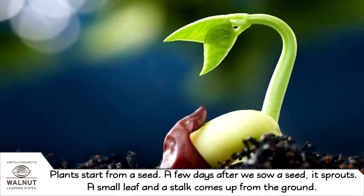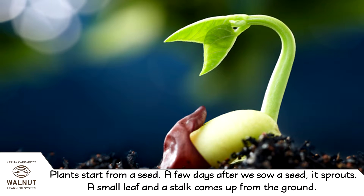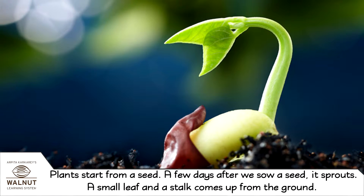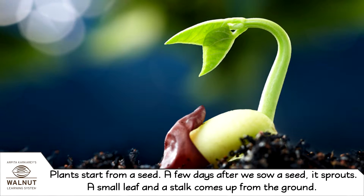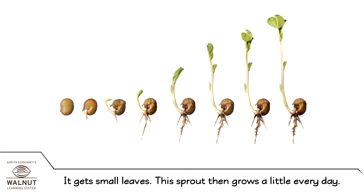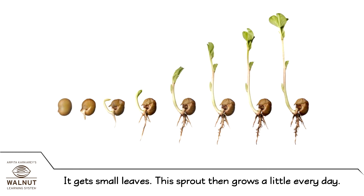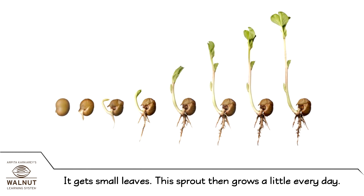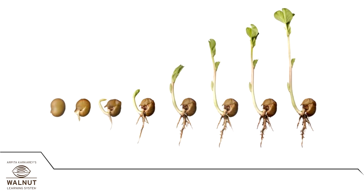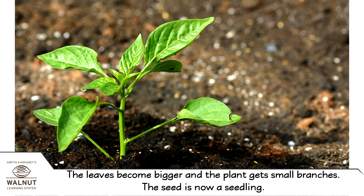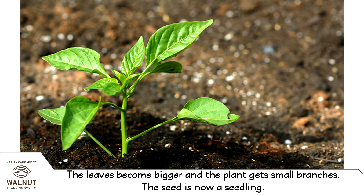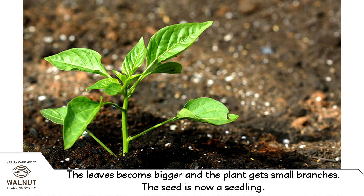Plants start from a seed. A few days after we sow a seed it sprouts. A small leaf and a stalk comes up from the ground. It gets small leaves. This sprout then grows a little every day. The leaves become bigger and the plant gets small branches. The seed is now a seedling.